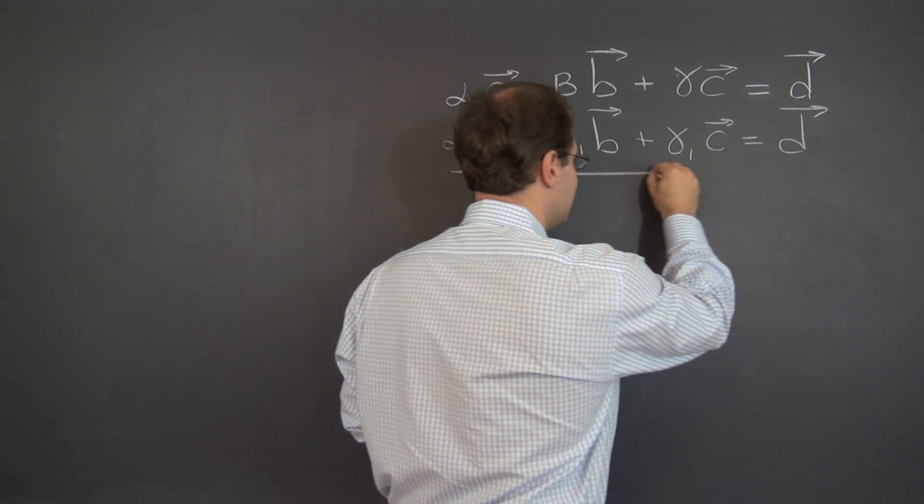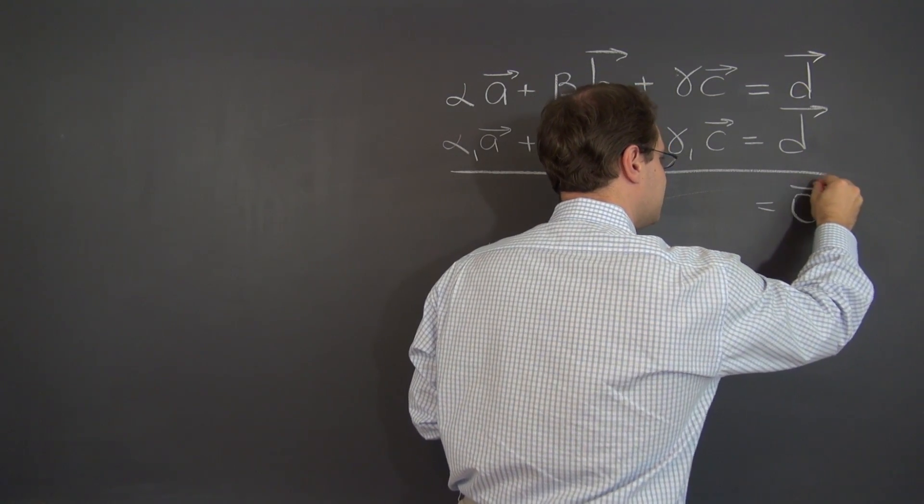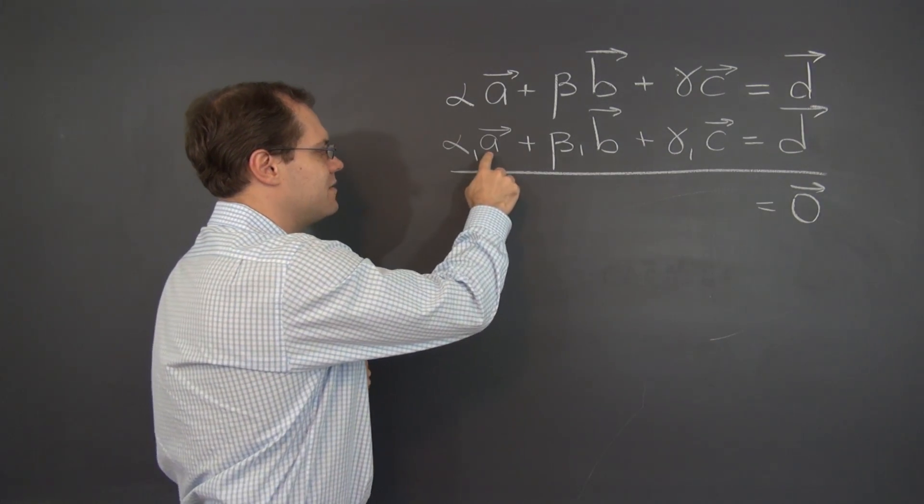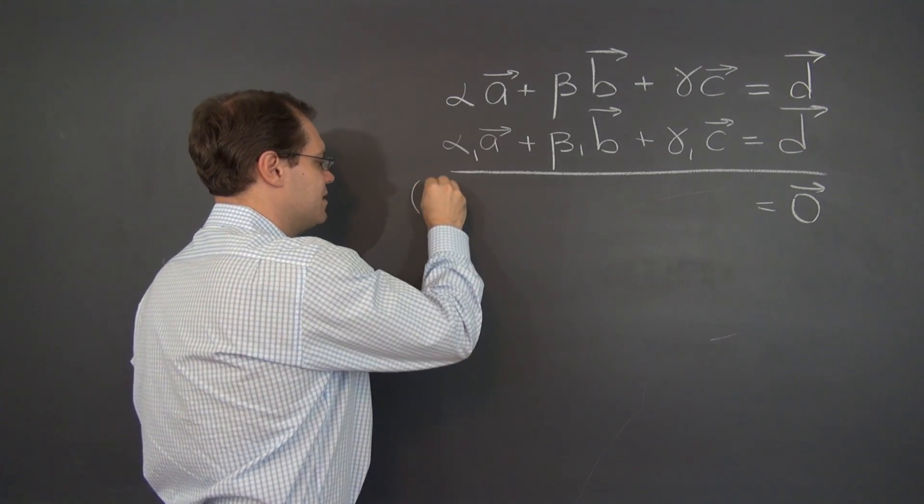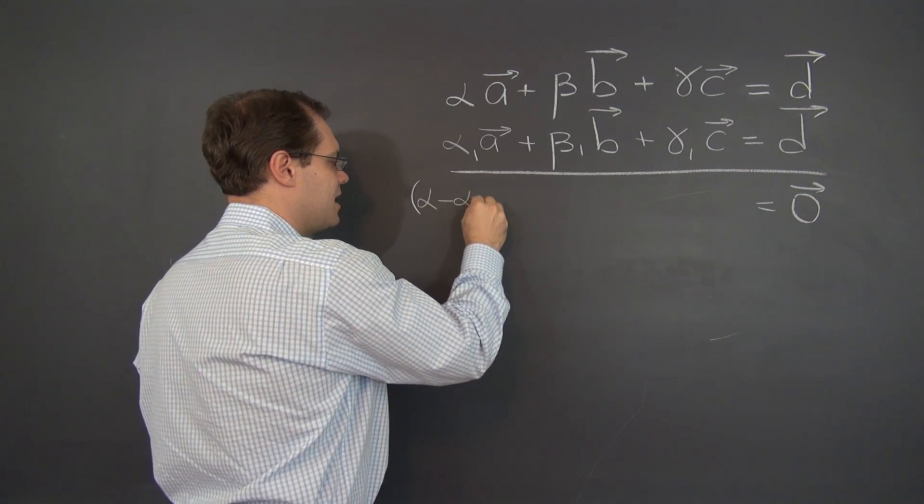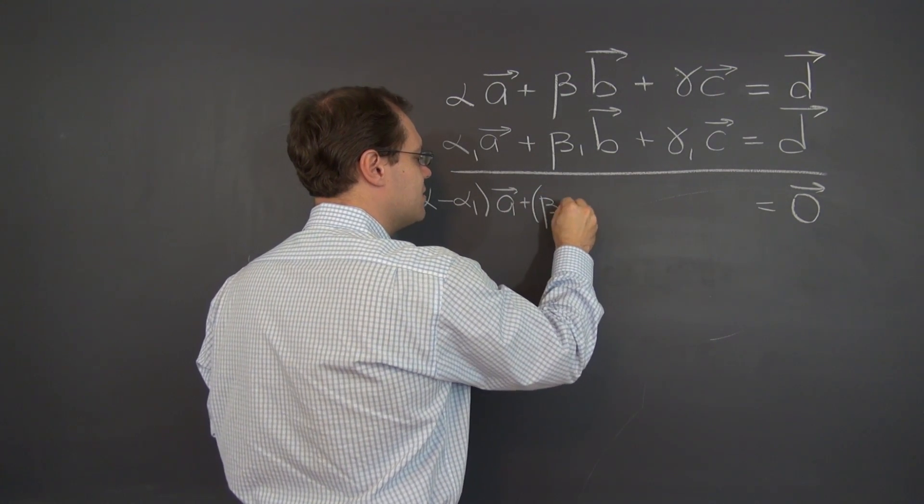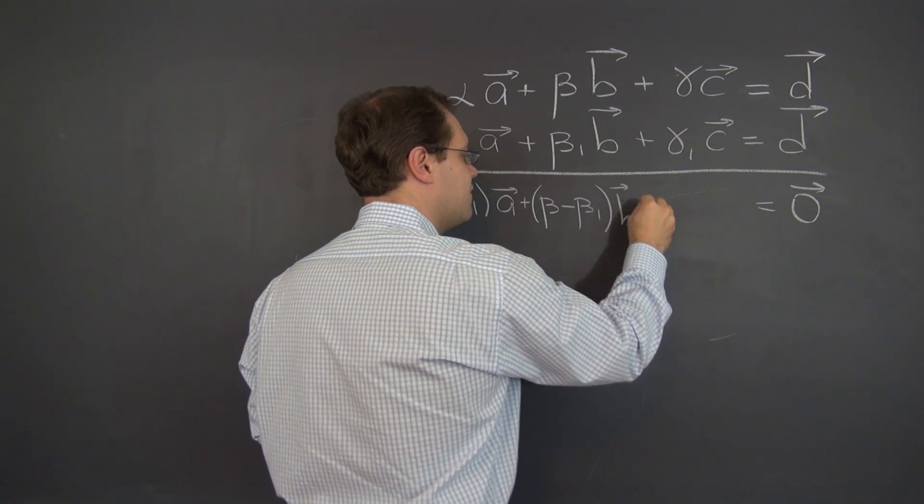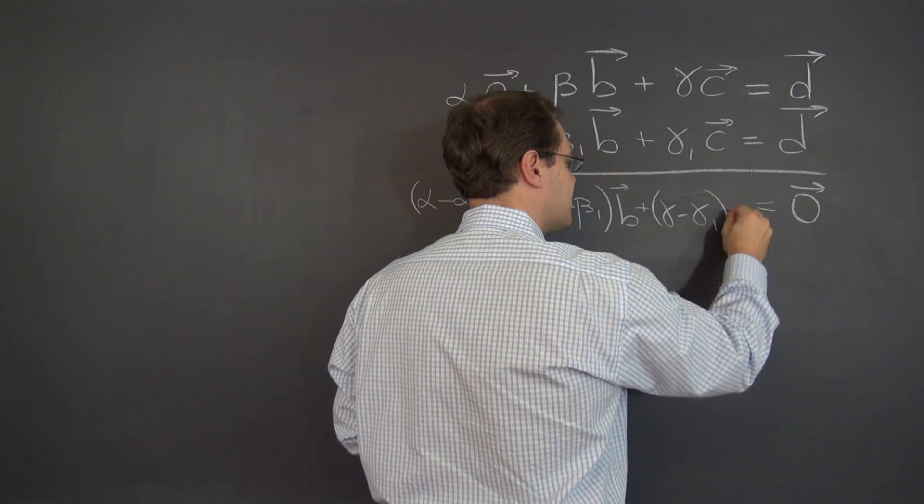So if we subtract one of these identities from the other, then on the right-hand side we'll have the zero vector. On the left-hand side we're able to combine vectors a, b, and c and we have the linear combination alpha minus alpha one a plus beta minus beta one b and finally gamma minus gamma one c.